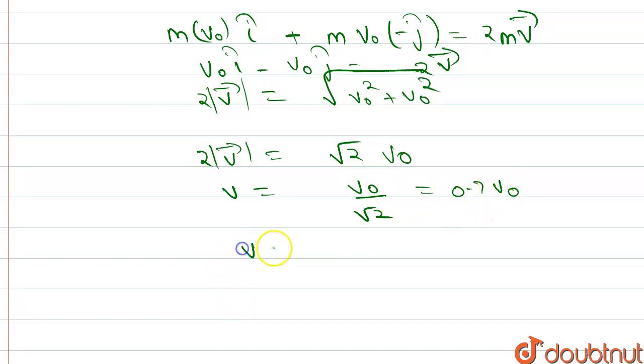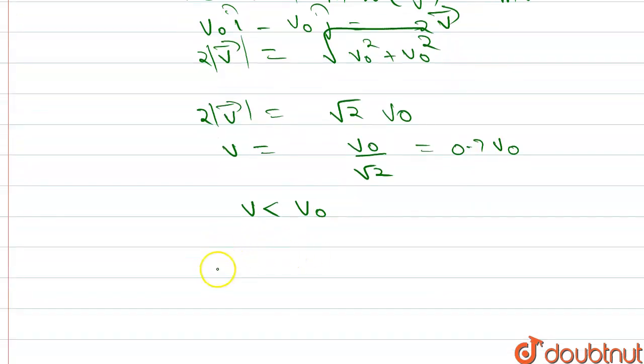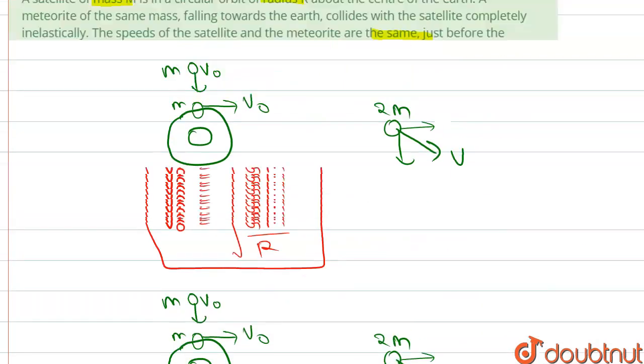So v is less than v₀. v₀ is the orbiting speed of the satellite around the earth. Since v < v₀, the subsequent motion of the combined body will move in an elliptical path.